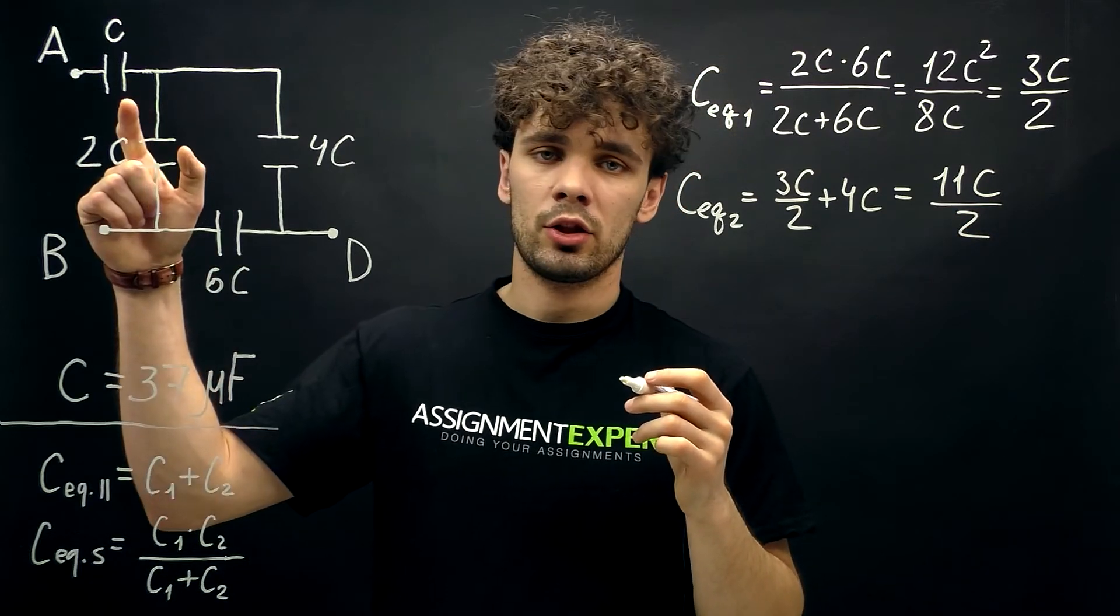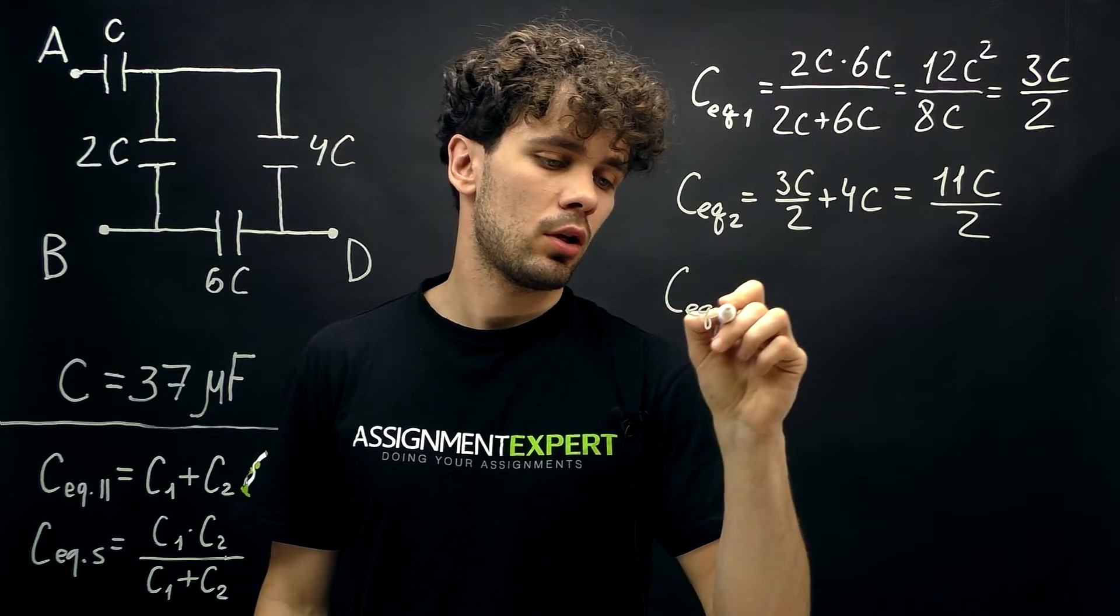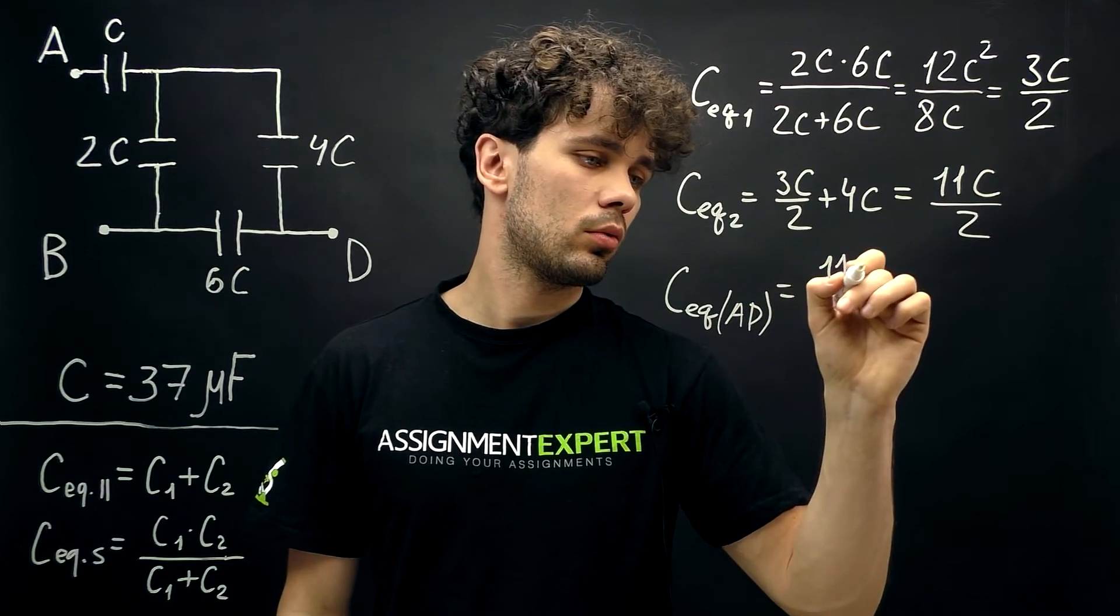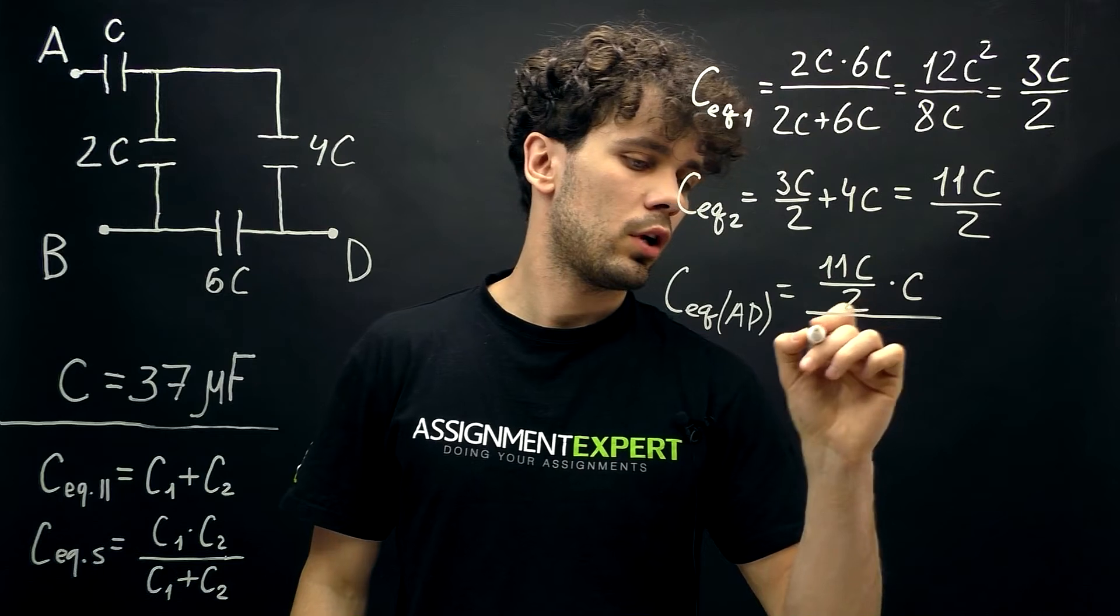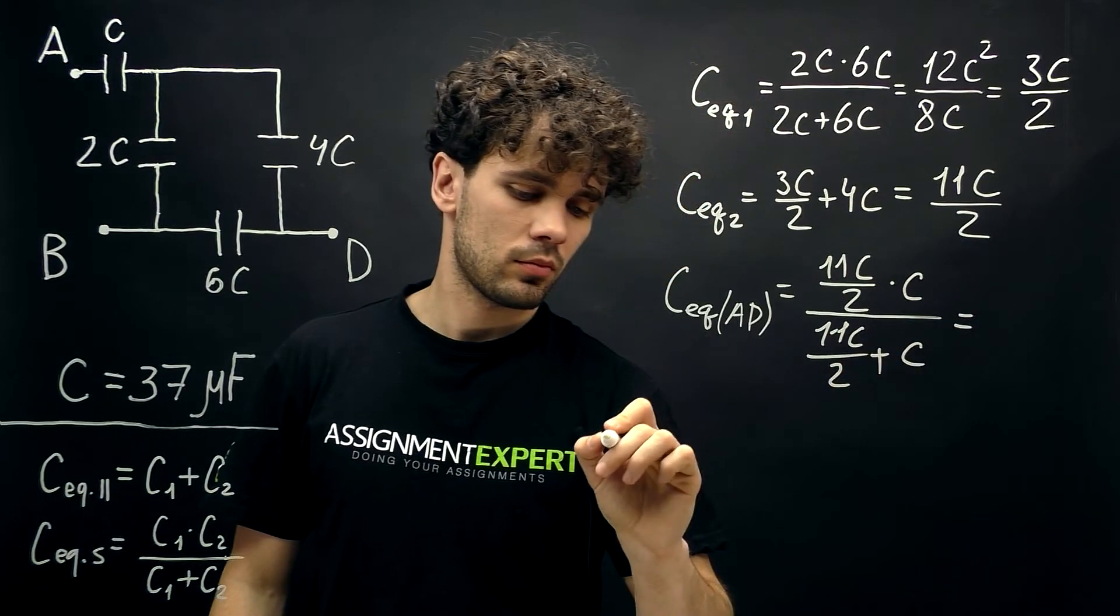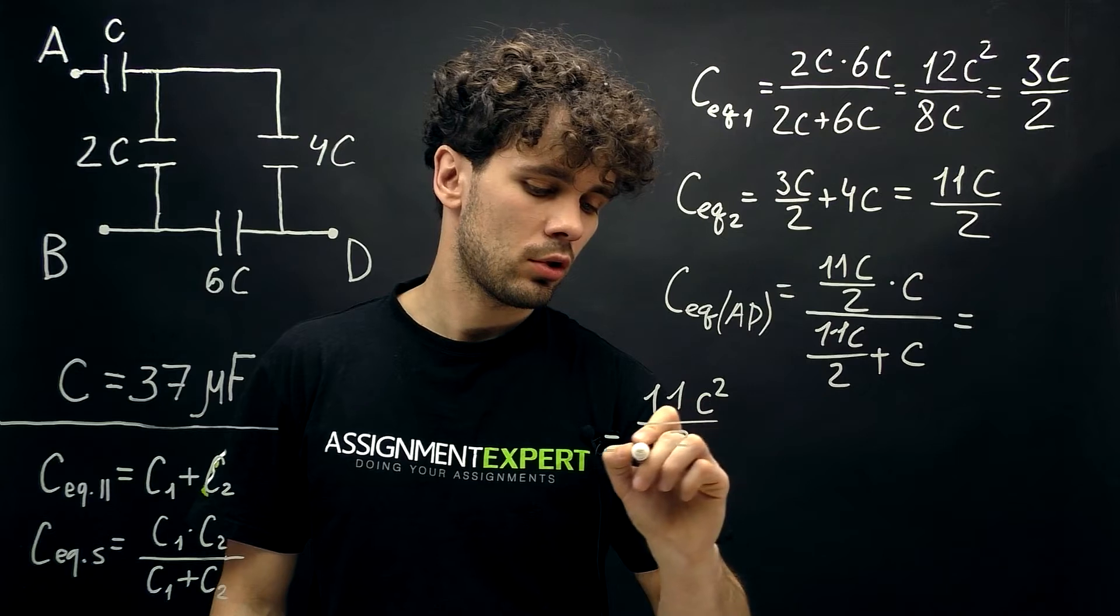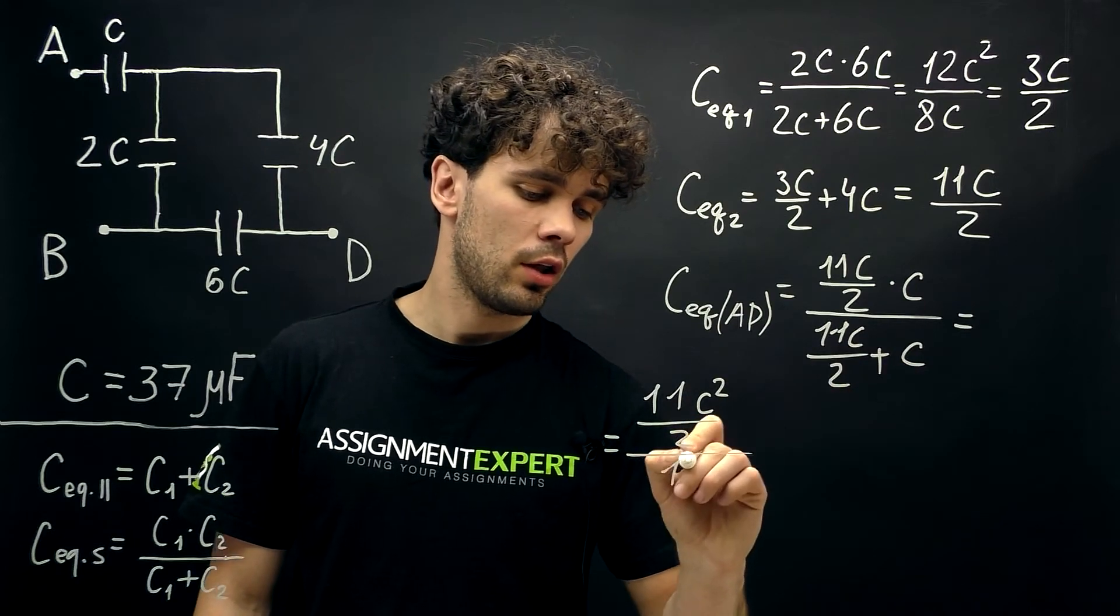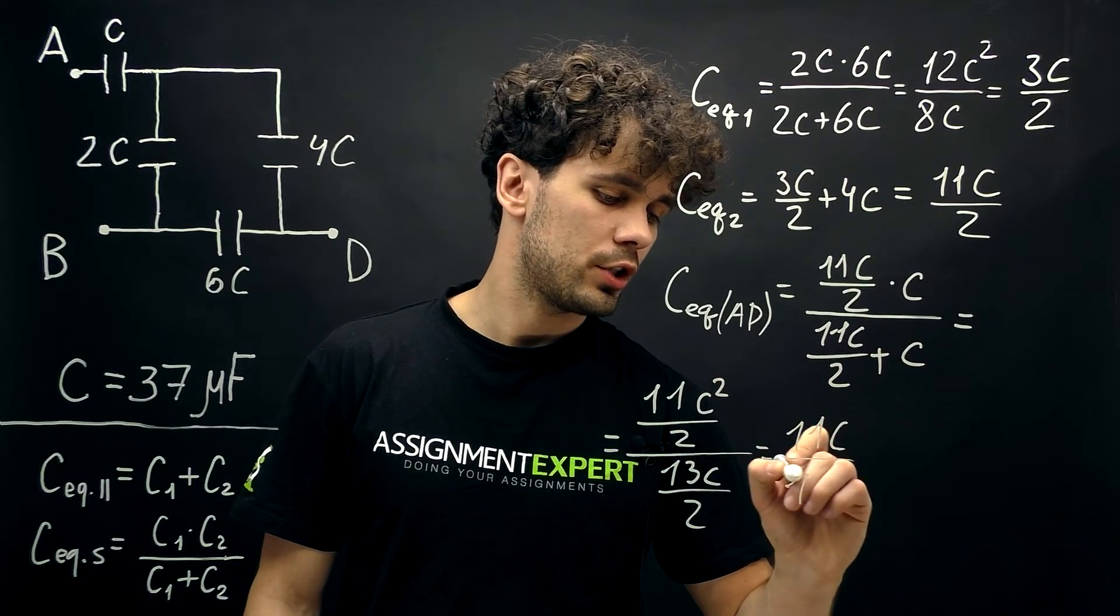And our last capacitor is again in series with the other capacitors. So we'll use this formula. C equivalent of AD equals 11C over 2 times C over 11C over 2 plus C. In the denominator we have 13C over 2. And we get 11C over 13.